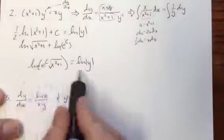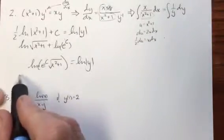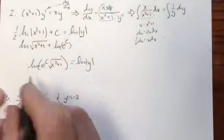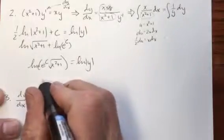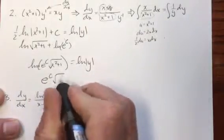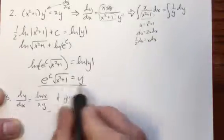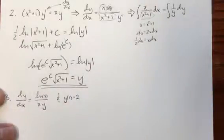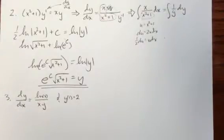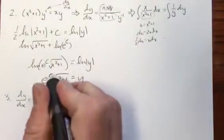which now if I raise e raised to each side like this, that'll undo it, and I get then e to the c radical x squared plus 1 is equal to y. So that is the solution to that, and this is where that constant term is. So that's the solution to that.